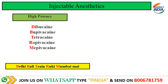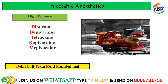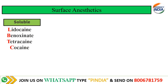Then, high potency injectable anesthetics include dibucaine, bupivacaine, tetracaine, ropivacaine, and levobupivacaine. We can keep these in mind using the first letters of the drugs to form the phrase 'Dubai train or Mumbai.' 'D' means dibucaine, 'B' means bupivacaine, 'T' means tetracaine, 'R' means ropivacaine, and 'M' means levobupivacaine.